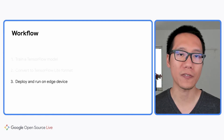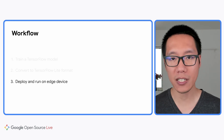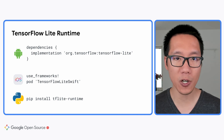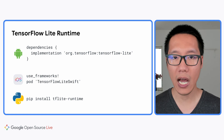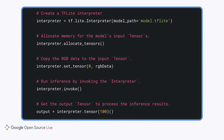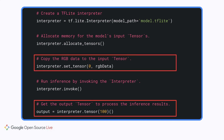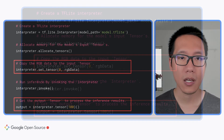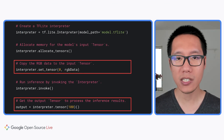The final step is to deploy the model on your device. Add the TensorFlow Lite runtime library to your application — this is different from the Task Library shown earlier — with Android, iOS, and Python options. The Python code to run a TensorFlow Lite model is similar to the Task Library, but the key difference is that TensorFlow Lite runtime requires inputs and outputs to be number arrays rather than high-level data types. This means you'll need to write all pre-processing and post-processing code yourself, such as converting an image to a float array in RGB format, and specify which tensor is the input and output.